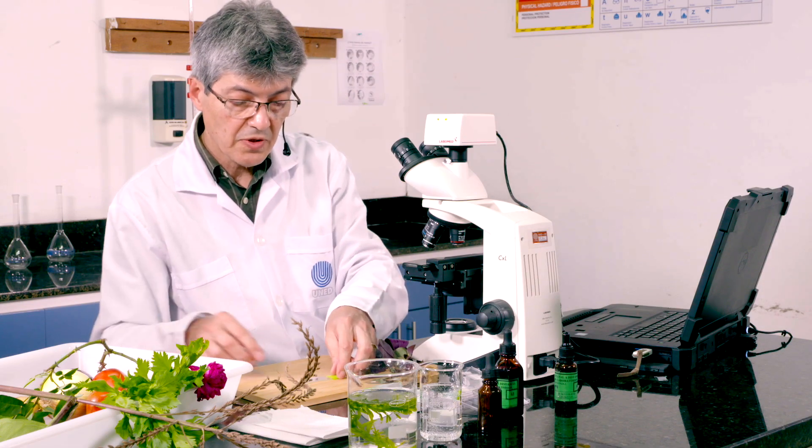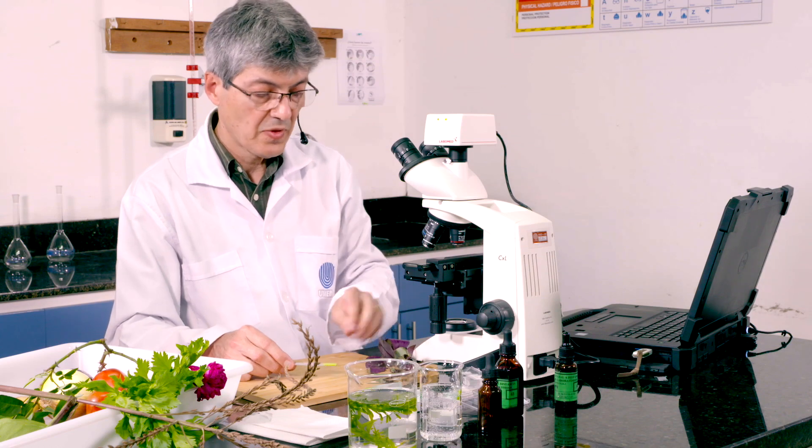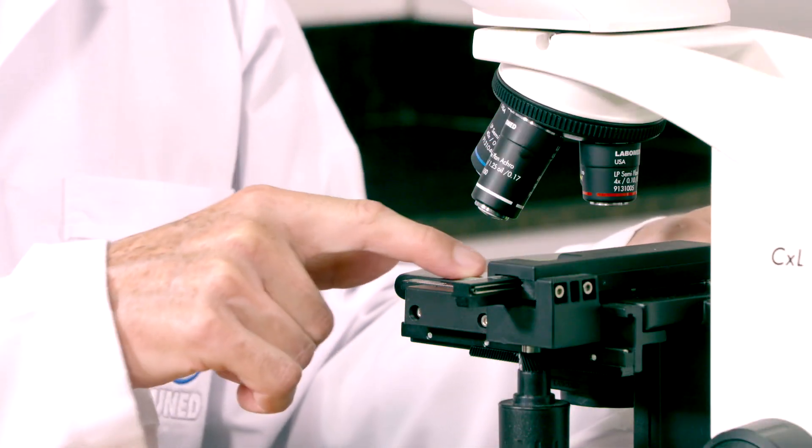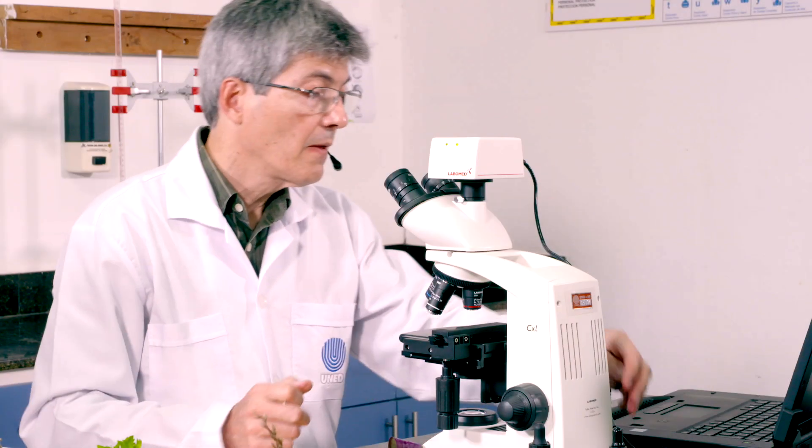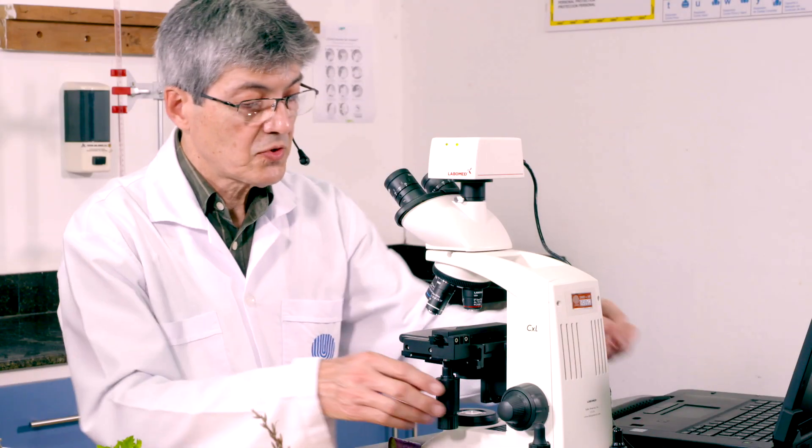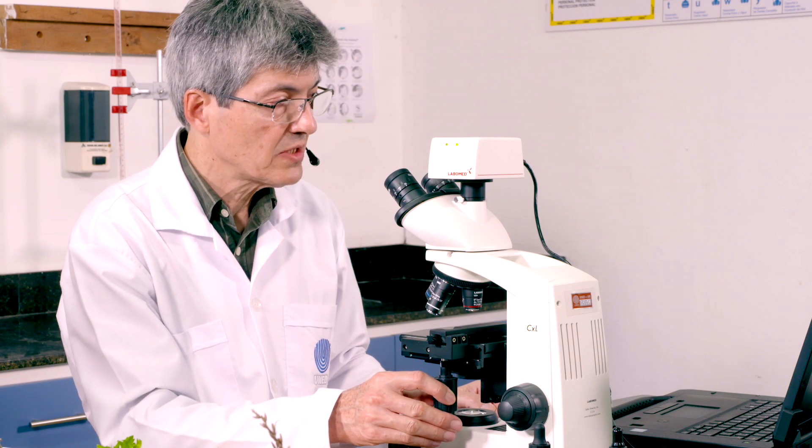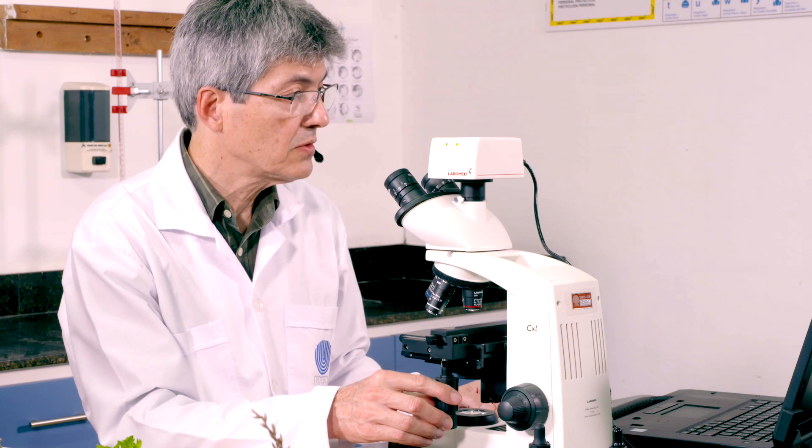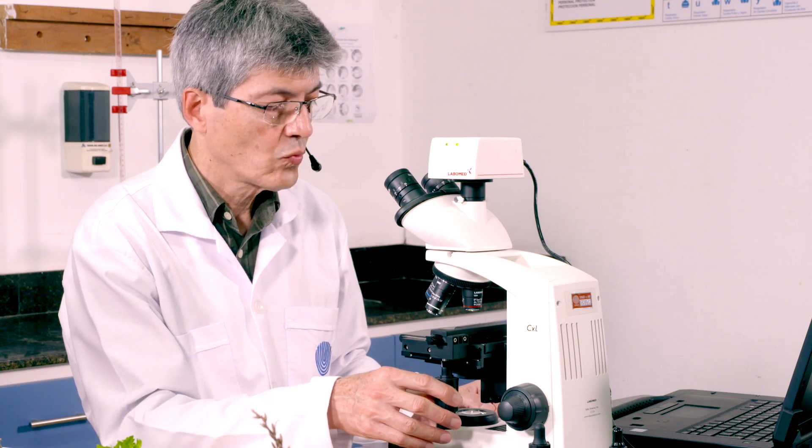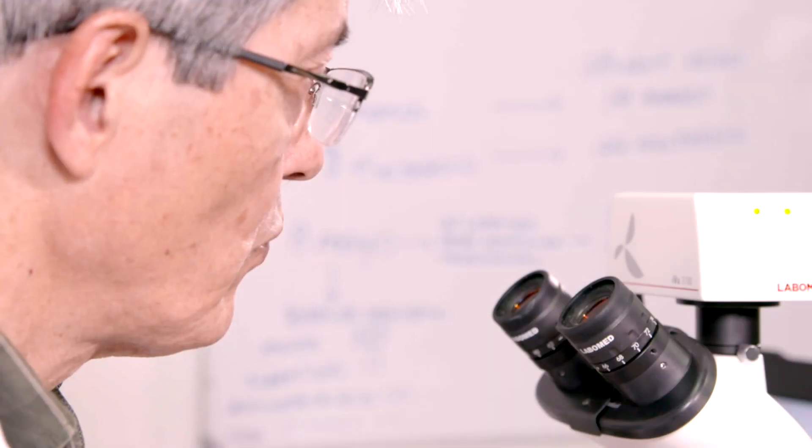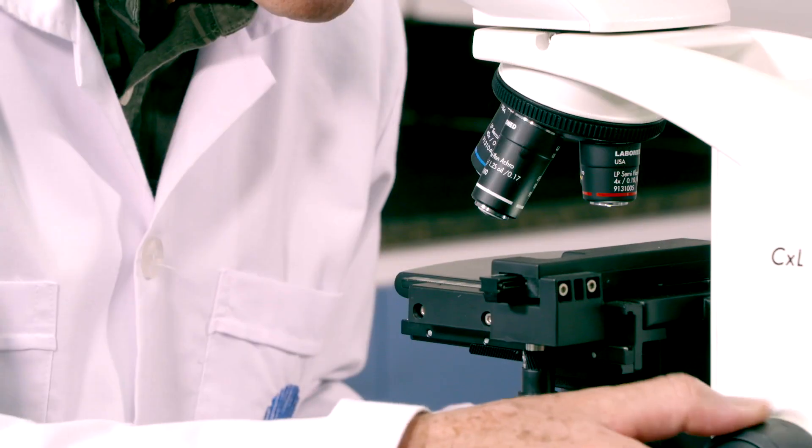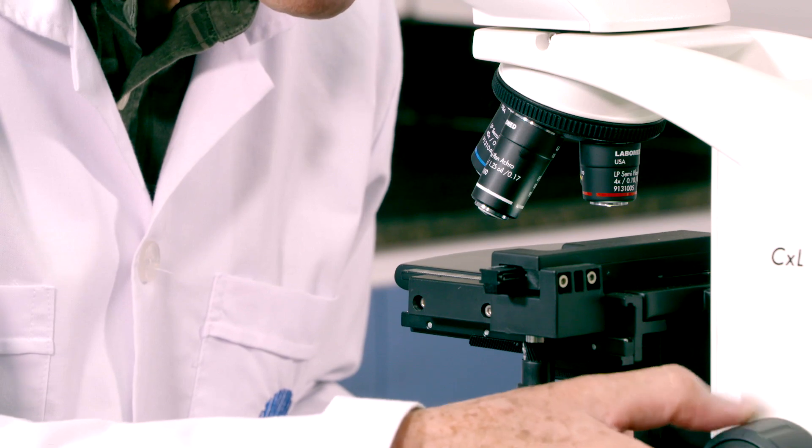We will proceed to mount our new sample in the microscope. We place it on the platina, we press it well, we turn it on, we locate our sample where the light is, and we proceed to raise the platina until we can observe the material.